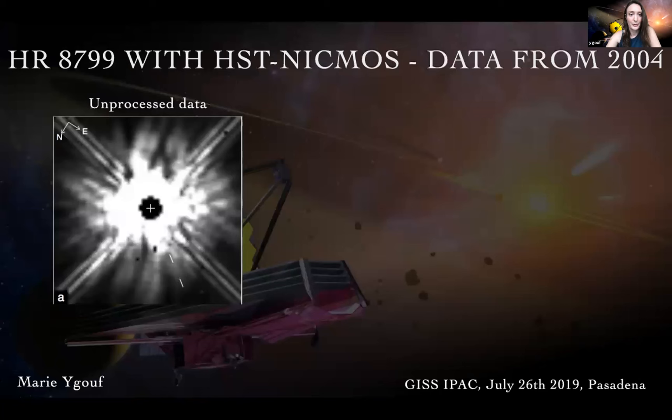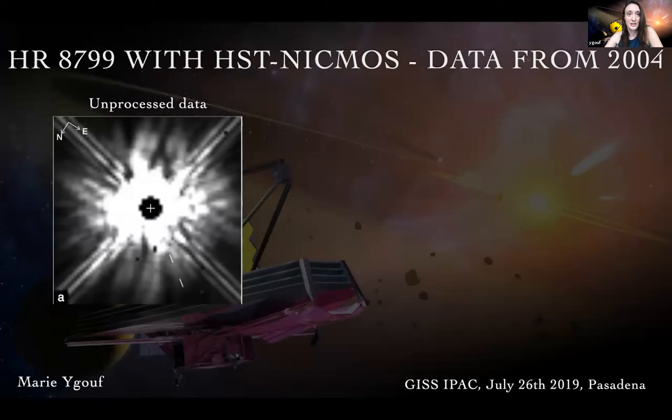However, on this image from the HST from the HR 8799 system, we can see that the coronagraph alone is not sufficient because a lot of residual starlight remains on the final image, hindering the detection of faint planet signals in the vicinity of the star. This is why astronomers had the idea to use post-processing to remove the residual starlight.